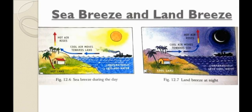During the day, the land gets heated quickly but the sea does not. The air above the hot land gets heated, rises up, and the cool air above the sea rushes in to take its place — thus a cool breeze blows towards the land during the day; this is the sea breeze. At night, the land cools down faster than the sea, so the sea is warmer. The hot air above the sea rises and cooler air from the land blows towards the sea to take its place — this is the land breeze, set up during the night.